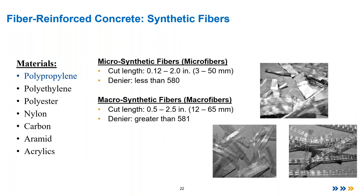In this presentation, I'll split fiber types into two categories: micros and macros. Micro synthetic fibers will be a shorter part of the presentation. The macros include synthetic macros and steel fibers, which have very similar properties. A microsynthetic fiber typically has a shorter cut length and is thinner than a macro — that's the main difference, captured by the denier value. Most synthetic fibers, whether micro or macro, are polypropylene-based.